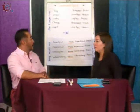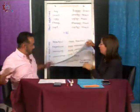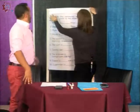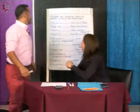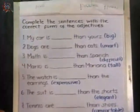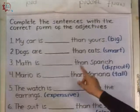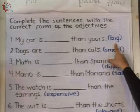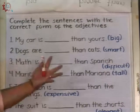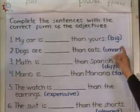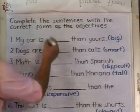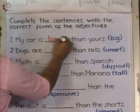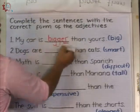¿Sí continuamos? Okay, entonces ponemos ya los ejercicios. Complete the sentences with the correct form of the adjectives. Number one: My car is ___ than yours — adjective: big. ¿Qué tipo de adjetivo es, corto o largo? Es un adjetivo corto. ¿Qué recordamos? Consonante-vocal-consonante: se dobla la última consonante y se agrega -ER. Perfectly good.